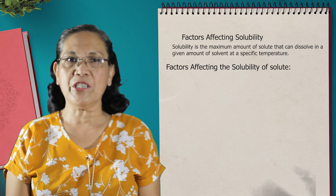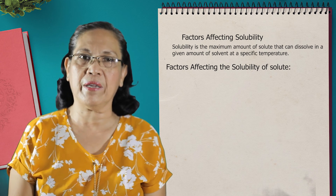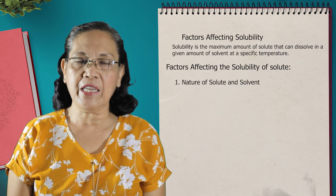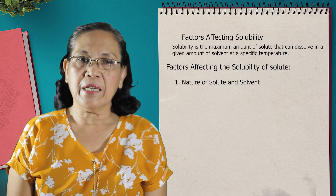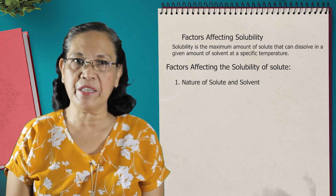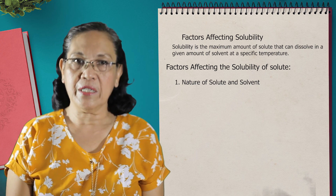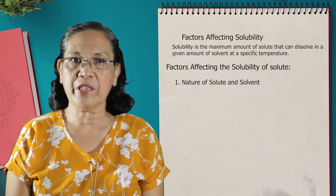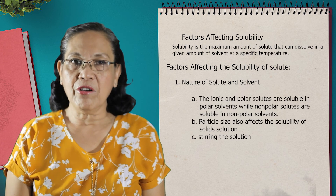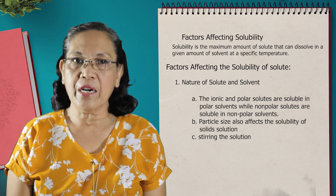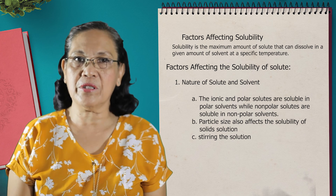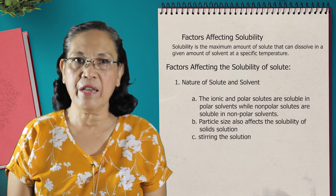The factors that affect the solubility of the solute are the following. Number one, the nature of the solute and solvent. The solubility of the solute in a solvent is based on the principle 'like dissolves like,' which pertains to the similarity in the polarity of the substances. Under this nature of solute and solvent, we also have three subtypes. Letter A: ionic and polar solutes are soluble in polar solvents, while non-polar solutes are also soluble in non-polar solvents.